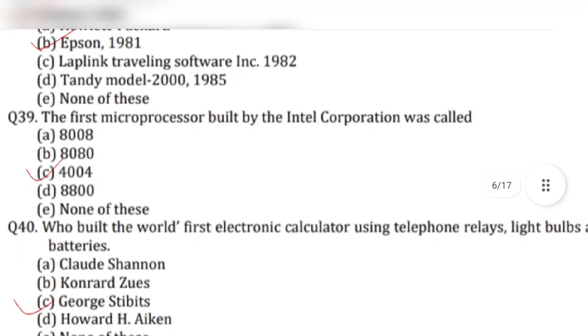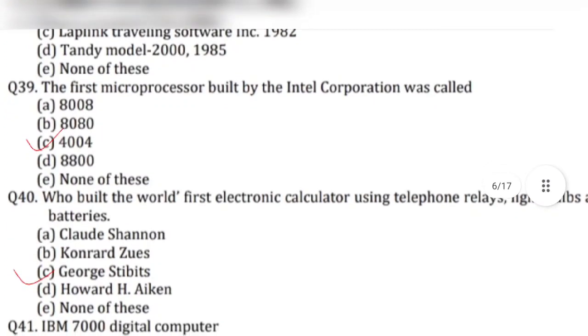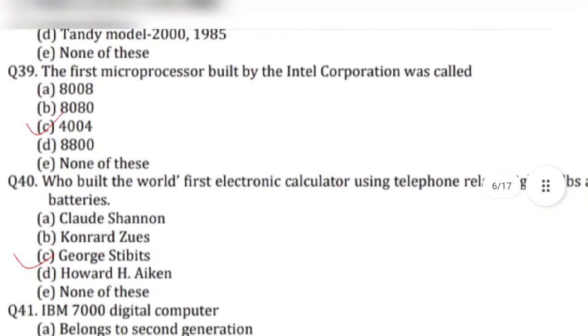Question 39: The first microprocessor built by the Intel Corporation was called — answer is option C, 4004.